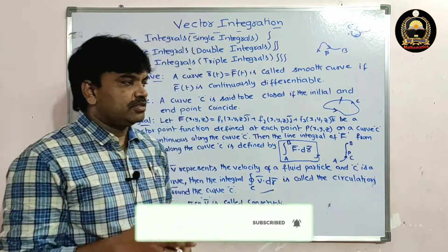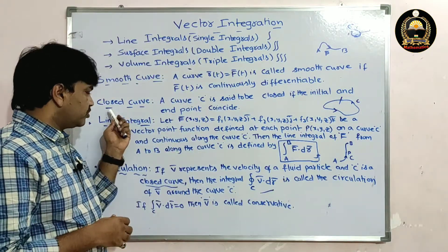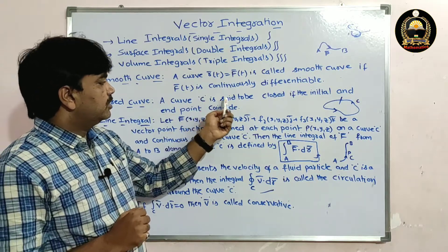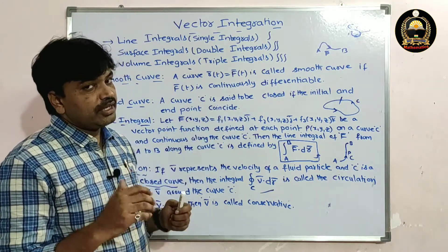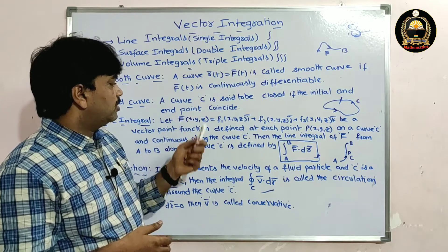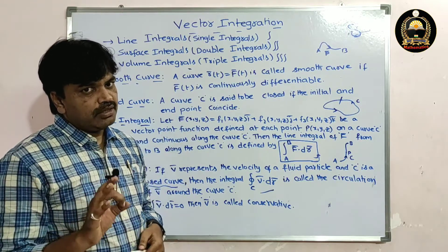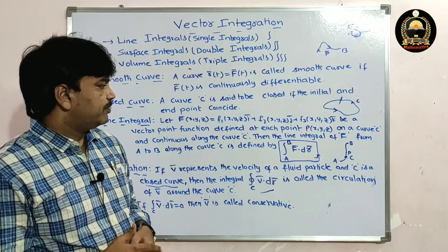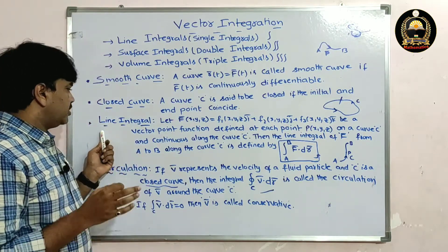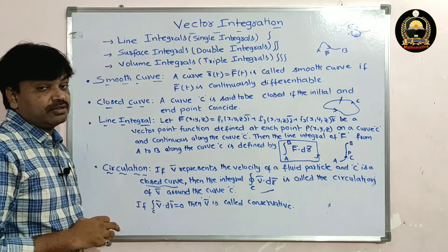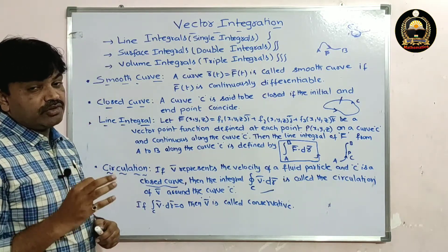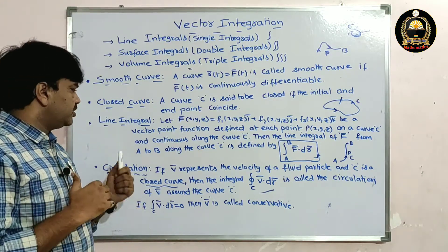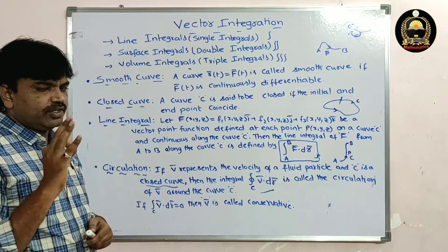Once again, the definition of a closed curve: a curve C is said to be closed if the initial and end points coincide. We will solve problems based on these definitions.